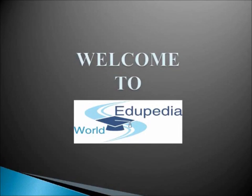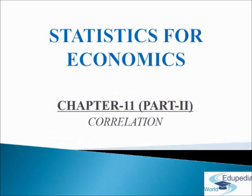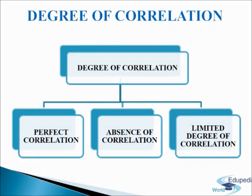Welcome to Edupedia World. In this module we will learn about degree of correlation. The degree of relationship between two variables refers to the coefficient of correlation. In other words, the coefficient of correlation measures the degree or intensity of correlation. The degrees of correlation can be studied in the following ways.